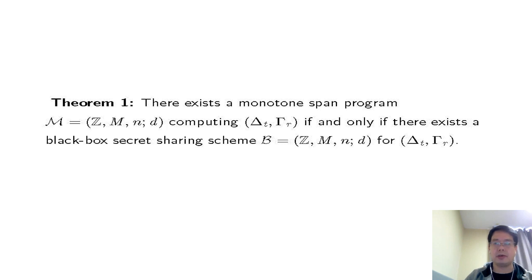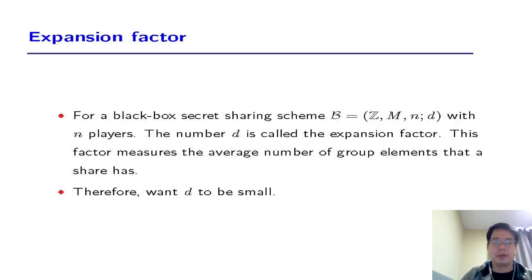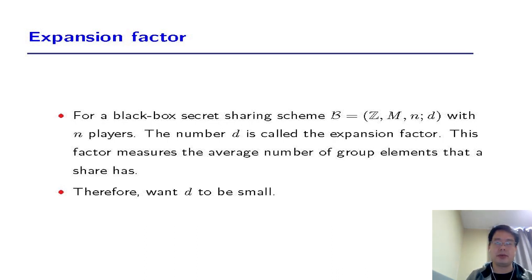This result shows the equivalence between monotone span program and black box secret sharing: a monotone span program M is equivalent to black box secret sharing for the same adversary and reconstruction structure. The number D is called the expansion factor, which measures the average number of group elements that a share has. Therefore we want D to be small, and the key part of black box secret sharing is this expansion factor.